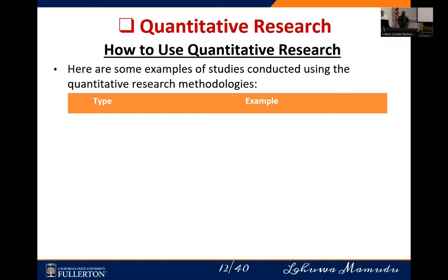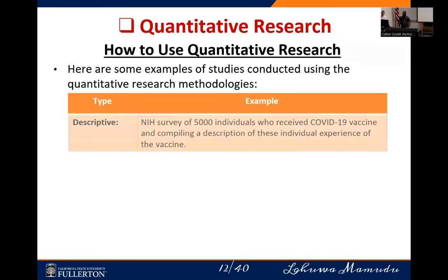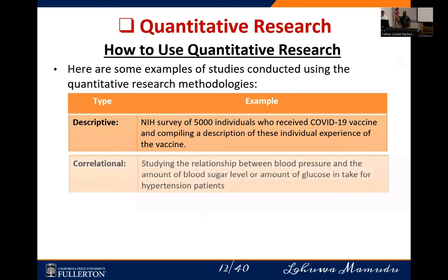Now let's link the types of quantitative research to some examples. For descriptive quantitative research, an example is if the NIH surveyed 5,000 individuals who received the COVID-19 vaccine and compiled a description of their individual experiences with the vaccine. This is an ongoing investigation by several health departments — they want to know how the vaccine is impacting individuals.